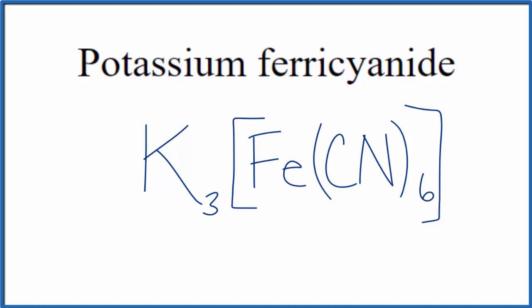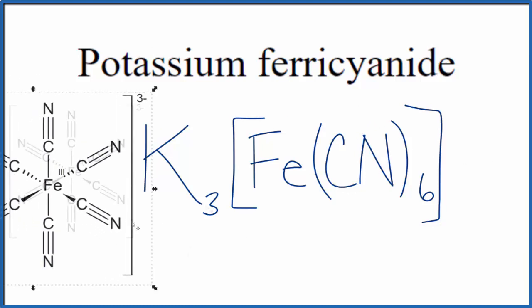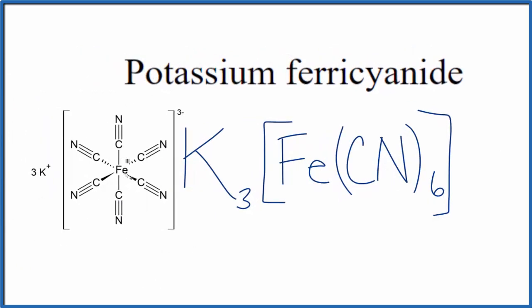This is kind of an interesting looking compound. Pull it over here. We have that iron at the center, and those six cyanide ions around that. This all has a 3 minus, and we have those 3 K plus, those 3 potassium ions, to balance the charge. So here's our 3 potassium ions.